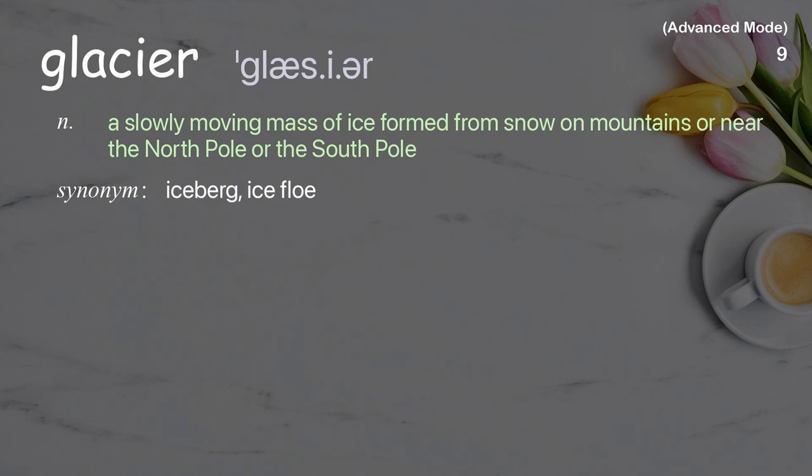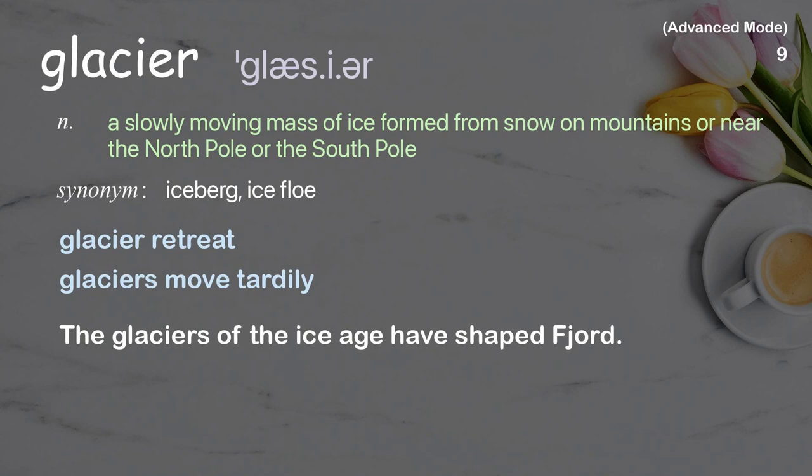Glacier: A slowly moving mass of ice formed from snow on mountains or near the North Pole or the South Pole. Examples: Glacier retreat, Glaciers move tardily. The glaciers of the ice age have shaped fjords.